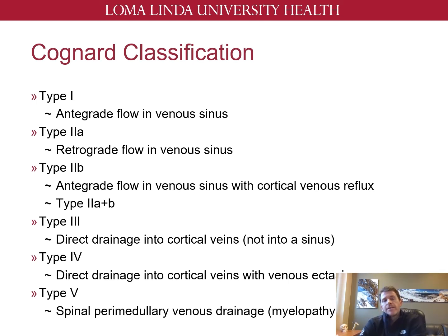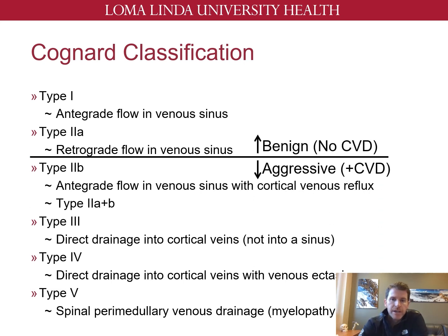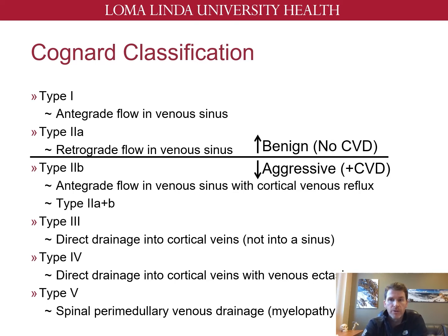The two most common classification systems for dural AV fistulas are the Cognard and Borden grading scales. The most important distinction in the Cognard system is the presence of cortical venous reflux, also described as cortical venous drainage. Dural AV fistulas without cortical venous drainage usually have a benign clinical course, while AVFs with cortical venous drainage have a significantly higher risk of hemorrhage and/or neurologic deficit, and therefore warrant treatment. It's also important to keep in mind that lower grade dural AV fistulas can go on to develop high grade features and therefore should be monitored over time.